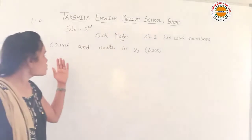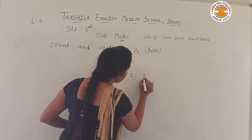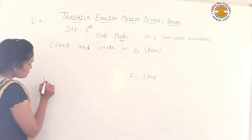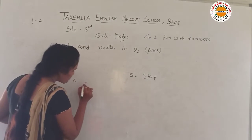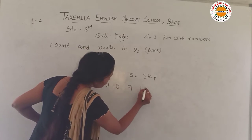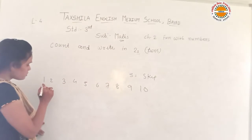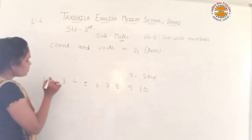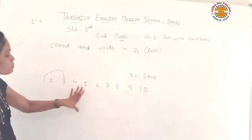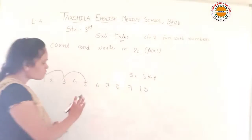Our next topic is count and write in twos. 'In twos' means skip. We will skip two numbers. We will skip either one from two numbers — we will skip one or two. Two numbers skip: three and four, we will skip three and four. We will skip five, and then we skip a pair of numbers.